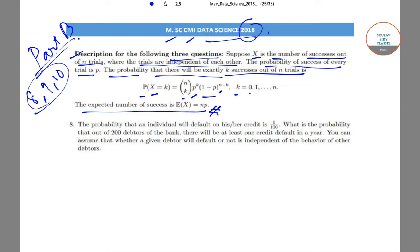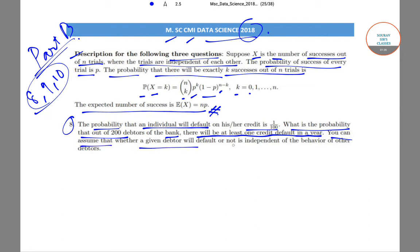Question number 8: the probability that an individual will default on their credit is 1/100. What is the probability that out of 200 debtors of the bank, there will be at least one credit default in a year? We can assume that whether a given debtor will default is independent of the behavior of other debtors. We need to find the probability that there is at least one default.